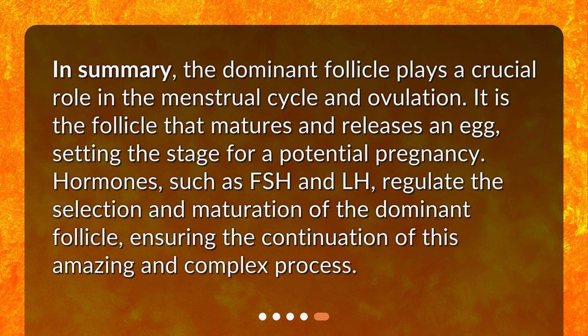In summary, the dominant follicle plays a crucial role in the menstrual cycle and ovulation. It is the follicle that matures and releases an egg, setting the stage for a potential pregnancy. Hormones such as FSH and LH regulate the selection and maturation of the dominant follicle, ensuring the continuation of this amazing and complex process.